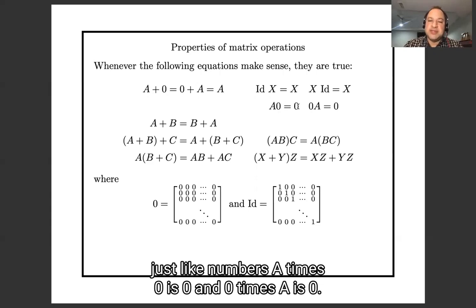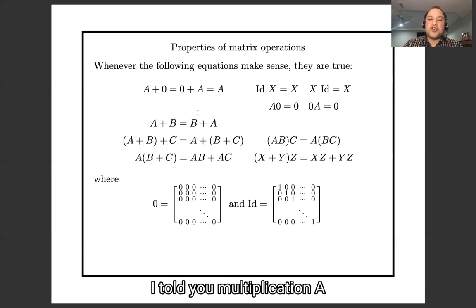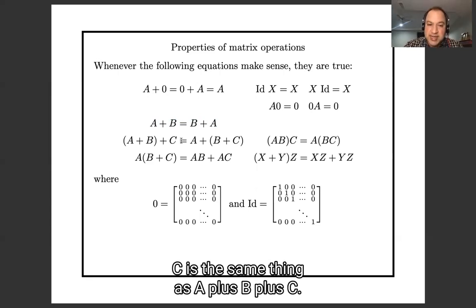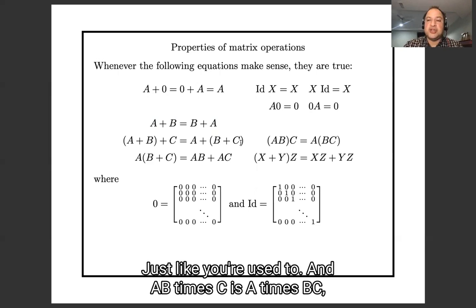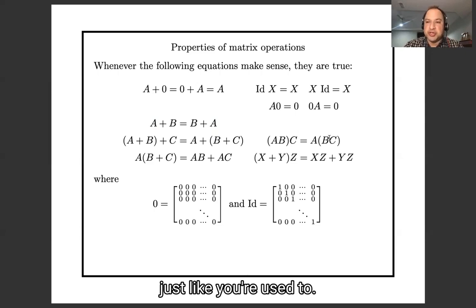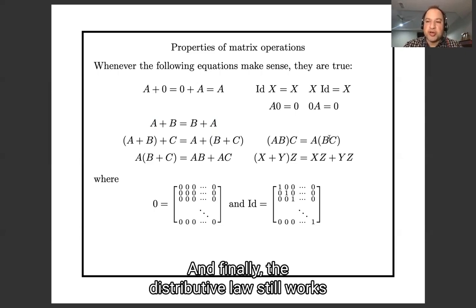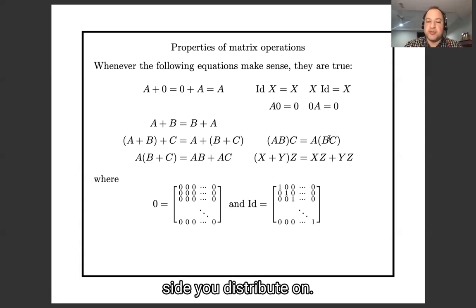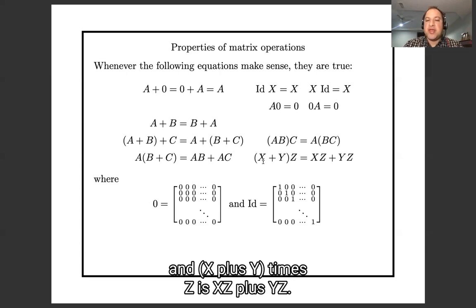I told you multiplication A times B is not usually B times A, but addition is still just fine - A plus B is B plus A. Also A plus B plus C is the same thing as A plus B plus C, just like you're used to. And AB times C is A times BC, just like you're used to. And finally the distributive law still works as long as you're careful about which side you distribute on. So A times B plus C is AB plus AC, and X plus Y times Z is XZ plus YZ.